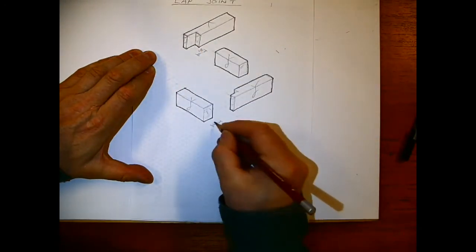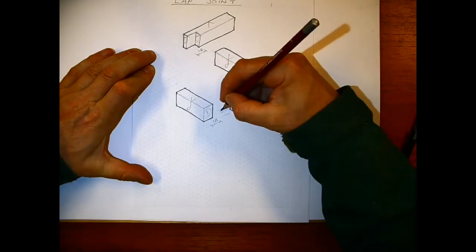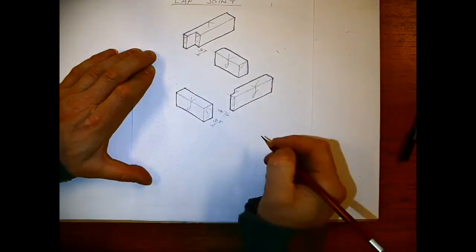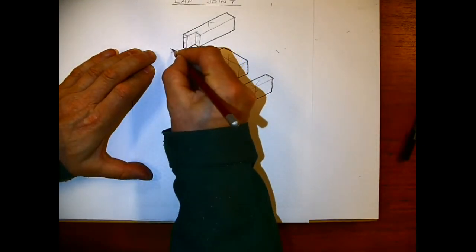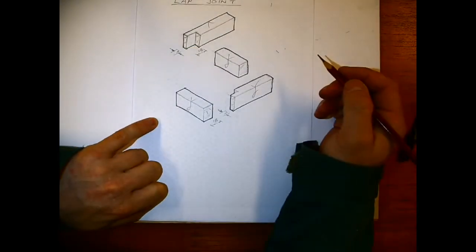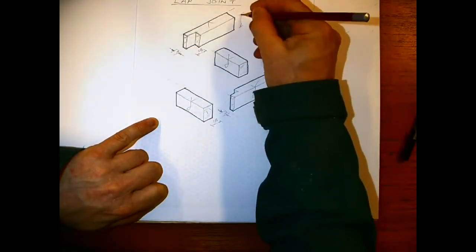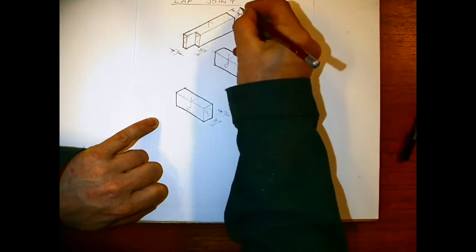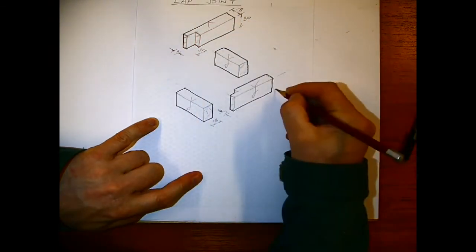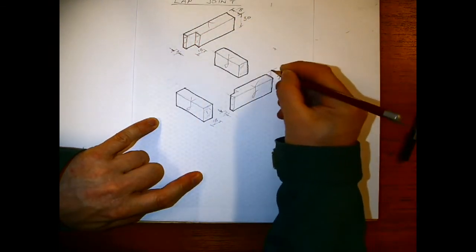I'll put in a few dimensions. You can refer back to the earlier video on putting in dimensions. When taking a look at this, ask yourself which of the views shows the best detail. I would tend to go with what's drawn on top there, as it shows better detail of the particular joint.